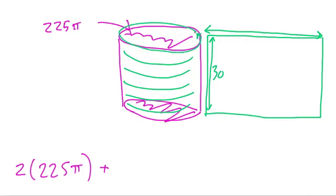And that means, if you remember about a circle, when you wrap around a circle, that's called circumference. So the width of this rectangle is the circumference of this circle up here. So what was the radius? Well, the radius was 15, right? What's the diameter?